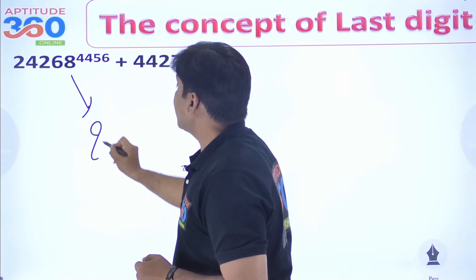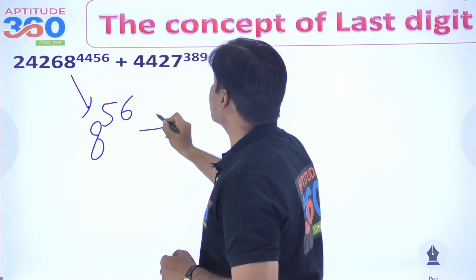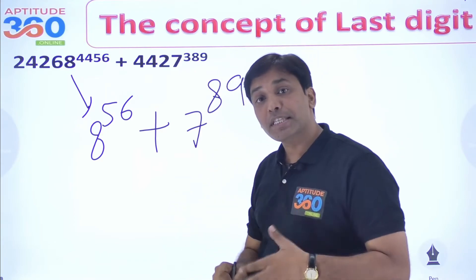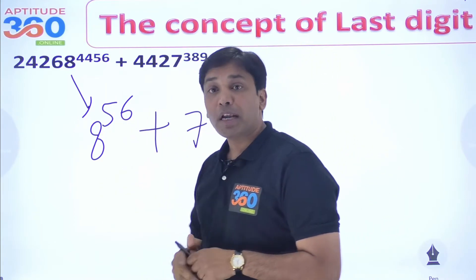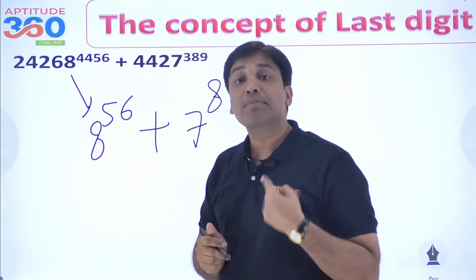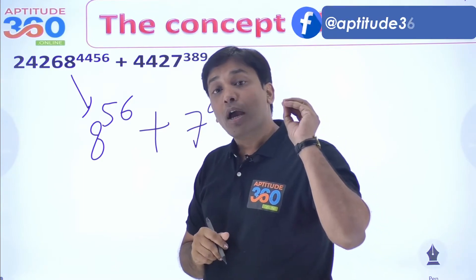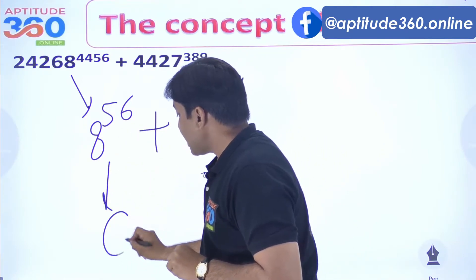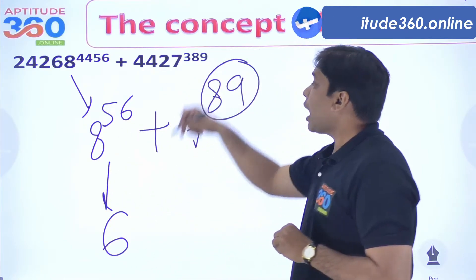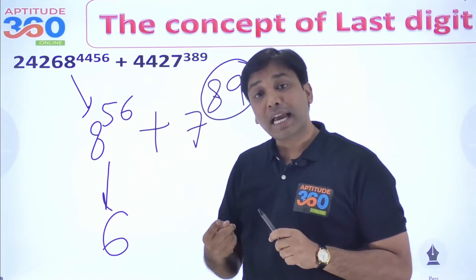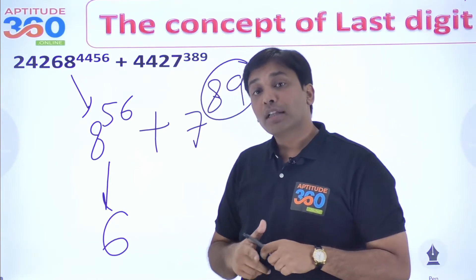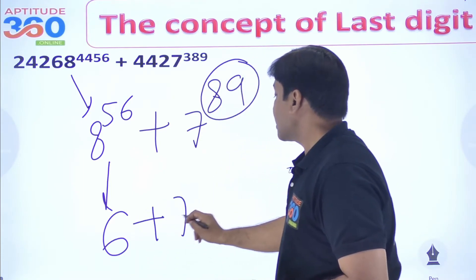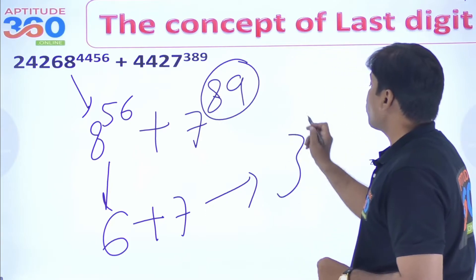This is 8 to the power 56 plus 7 to the power 89. 56 is divisible by 4 because the cyclicity of 8 is 4, so the digit is 6. For 7 to the power 89, dividing 89 by 4 gives remainder 1, so the digit at unit place is 7. Adding 6 and 7 gives unit digit 3. That is the answer.